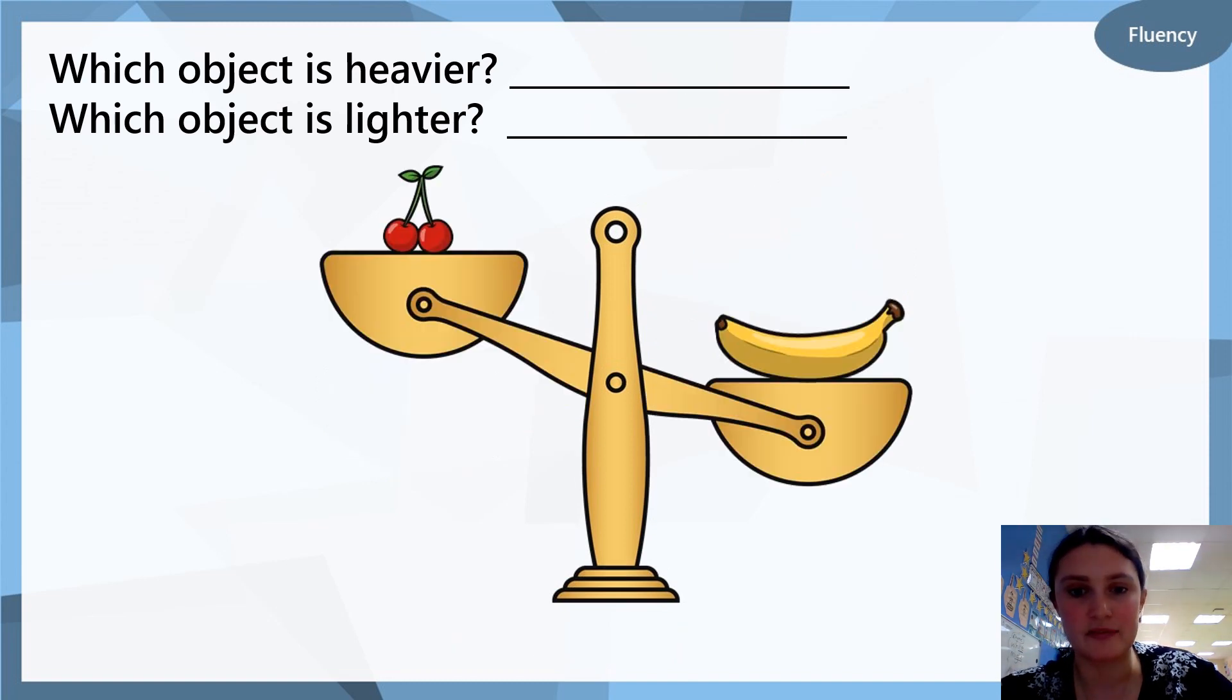Okay, our next question. We have some cherries and we have a banana. I want you to take your paper and for question 2, I want you to write which object is heavier and which object is lighter.